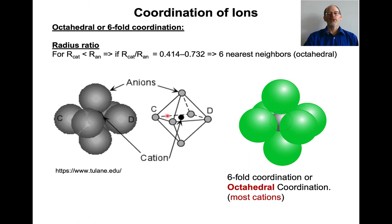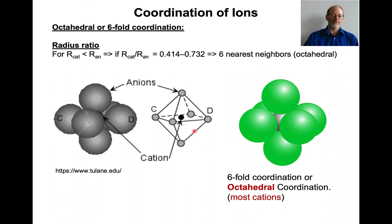As the cation gets smaller, coordination switches to six-fold or octahedral coordination — six anions packed around it: four in a square plane plus one on top and one on the bottom. Note that octahedral means the polygon has eight sides, but the number of coordinating anions is six, not eight. So octahedral coordination has a coordination number of 6.